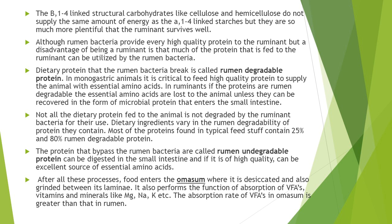The protein that bypasses the rumen bacteria or is not broken down by them is called rumen undegradable protein. This rumen undegradable protein can be digested in the small intestine. If this rumen undegradable protein is of very high quality, it can be an excellent source of essential amino acids to the ruminant. In non-ruminants like horses, the digestion and absorption of proteins and amino acids occurs in the small intestine.